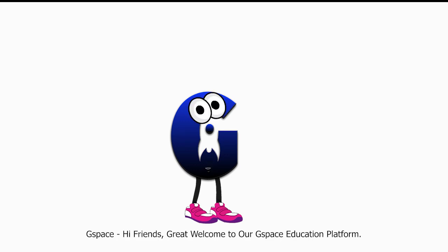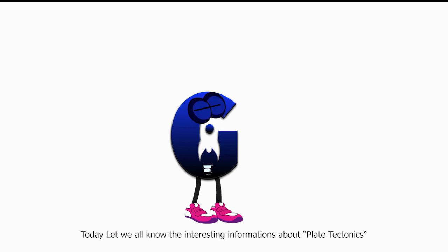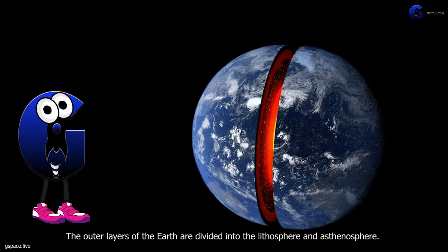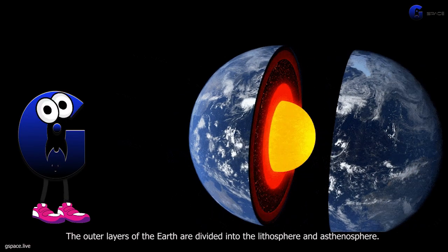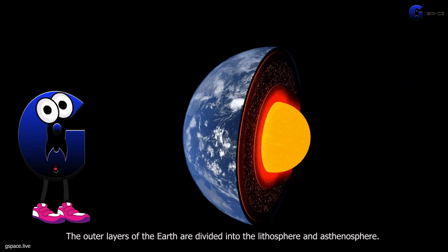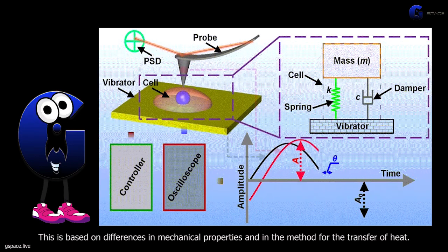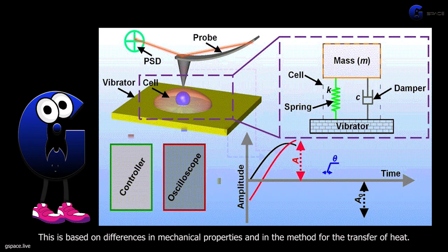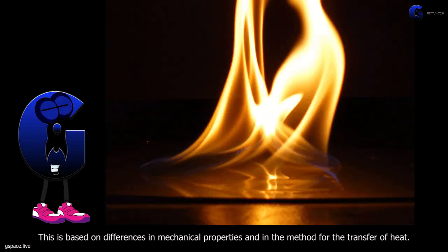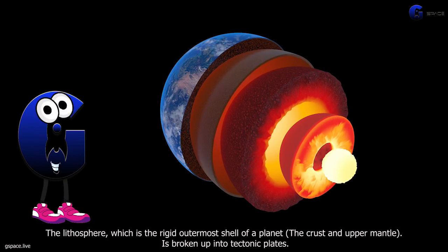Welcome to our G Space Education Platform. Today we'll learn interesting information about plate tectonics. The outer layers of the earth are divided into the lithosphere and asthenosphere, based on differences in mechanical properties and in the method for the transfer of heat.